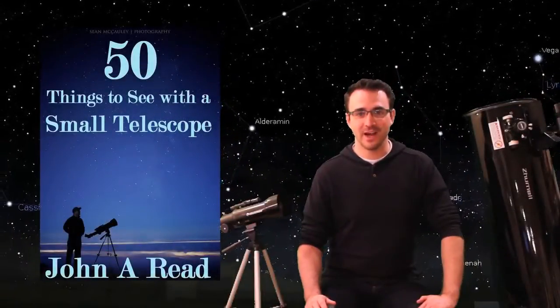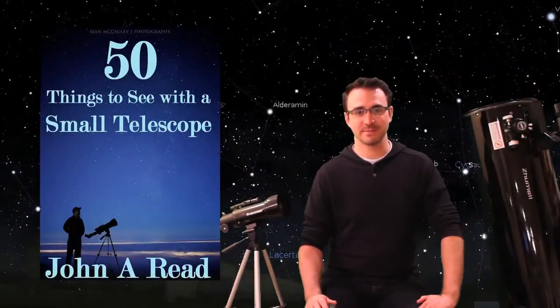Hi, my name is John Reed. I am the author of 50 Things to See with a Small Telescope. The intent of this book is to increase the enjoyment of telescope ownership.